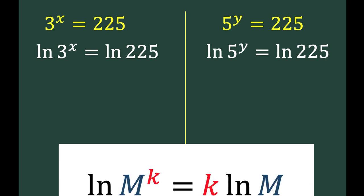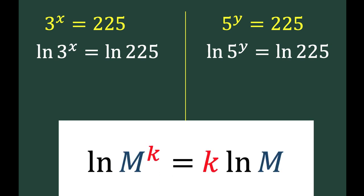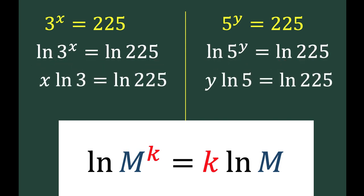Now let's recall some properties of logarithm. If we have ln of m raised to k, we can rewrite this as the exponent multiplied by ln of m. Therefore, we can write x at the front to arrive at x ln of 3. Similarly, the exponent y is written at the front, so we have y ln of 5 equals ln of 225.